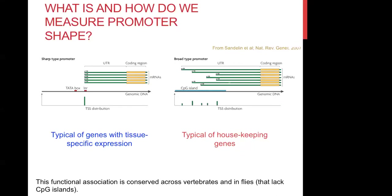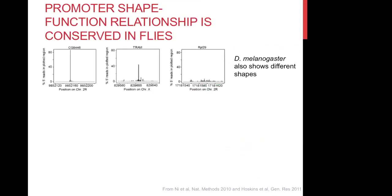The interesting thing is that this association between function and shape is also conserved in other organisms such as flies, which, for example, lack CpG islands. When you look at the promoters in Drosophila melanogaster, they still have these different shapes.